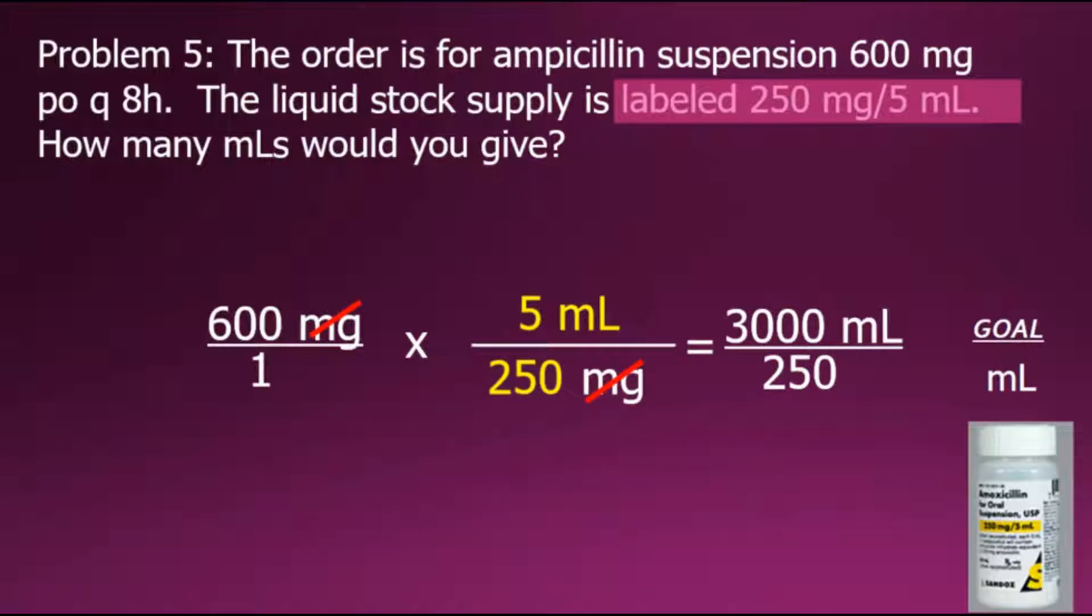Final simplification will be the division of the numerator, 3000, by the denominator, 250, to give us a final answer in the denominator, and the unit that we set as our goal of 12 milliliters.